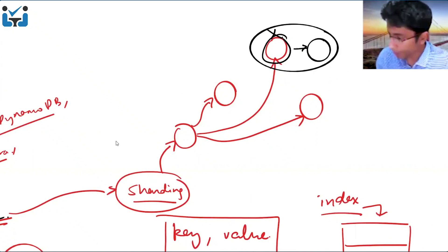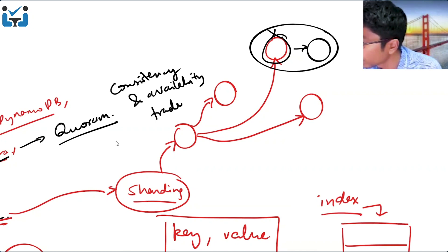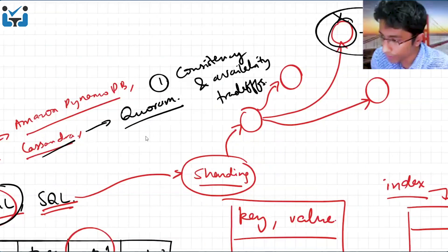This is just one thing that NoSQL provides. NoSQL also provides you some other benefits. Like that is in Cassandra, for example, there is something called Quorum. So it gives you consistency and availability trade-offs. That's point number one, that's one benefit of NoSQL databases.